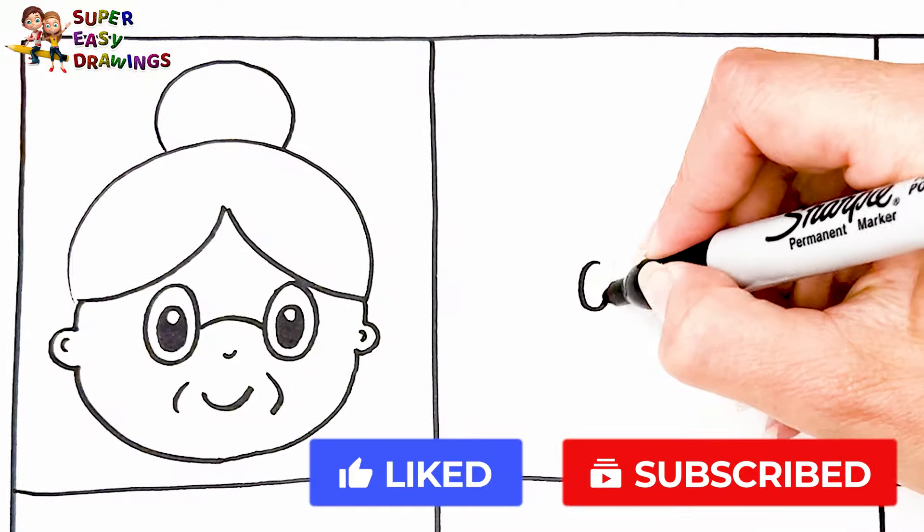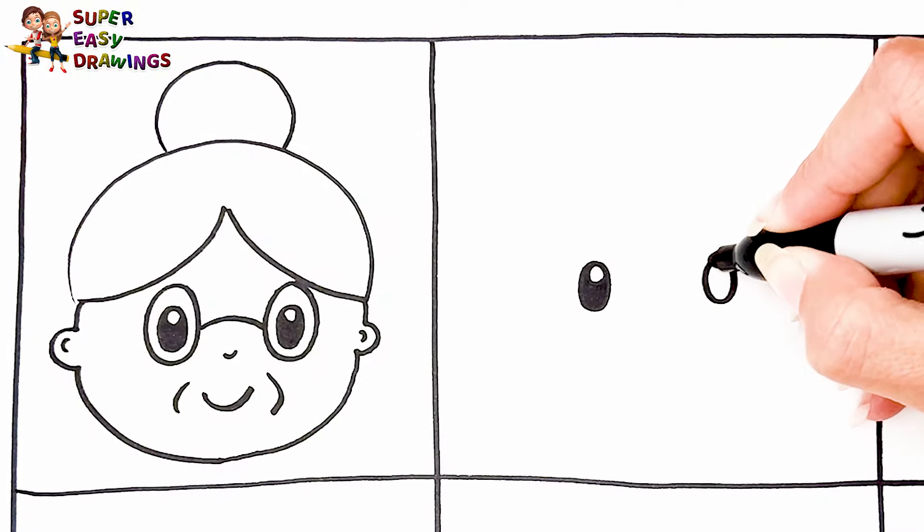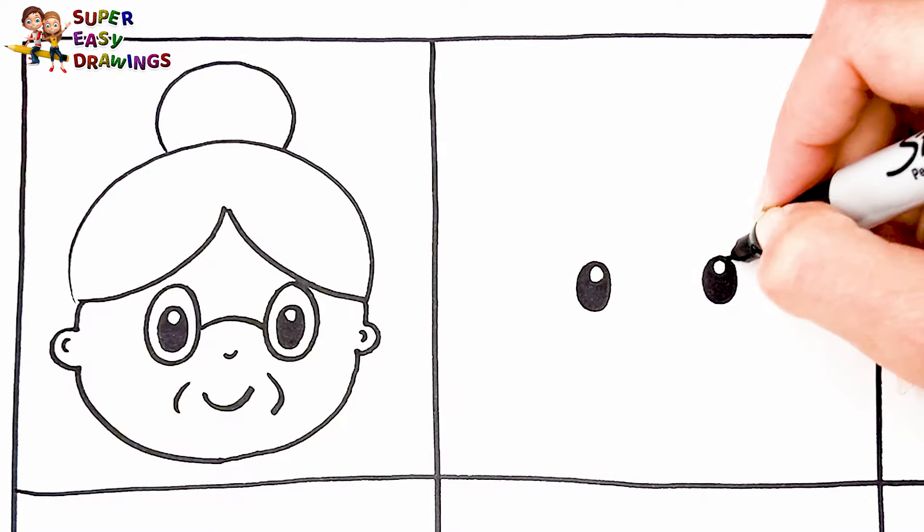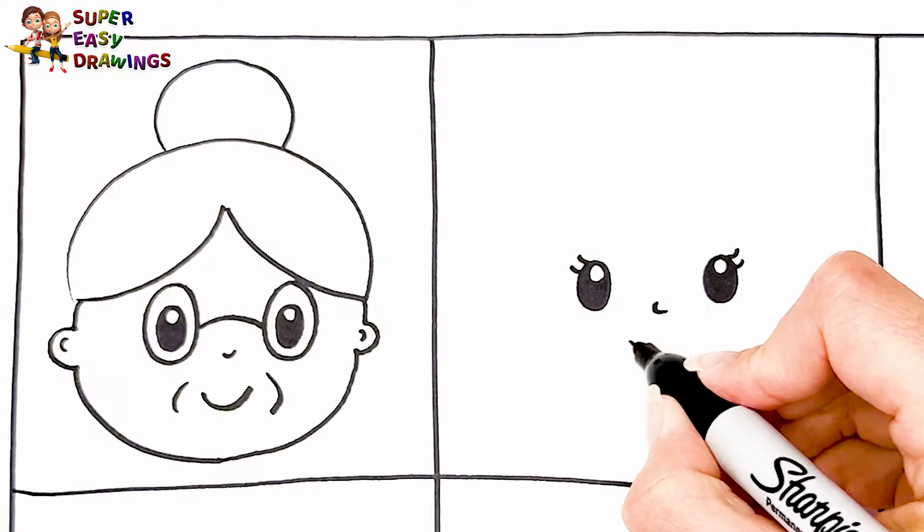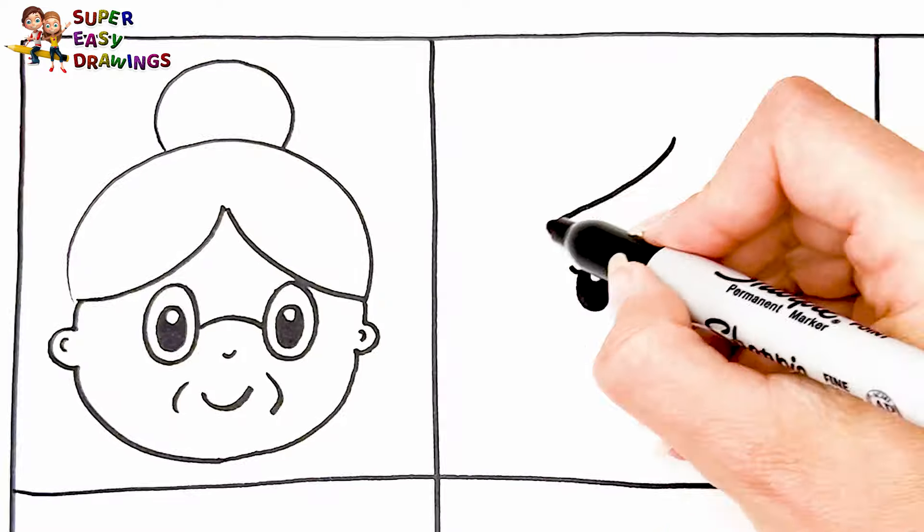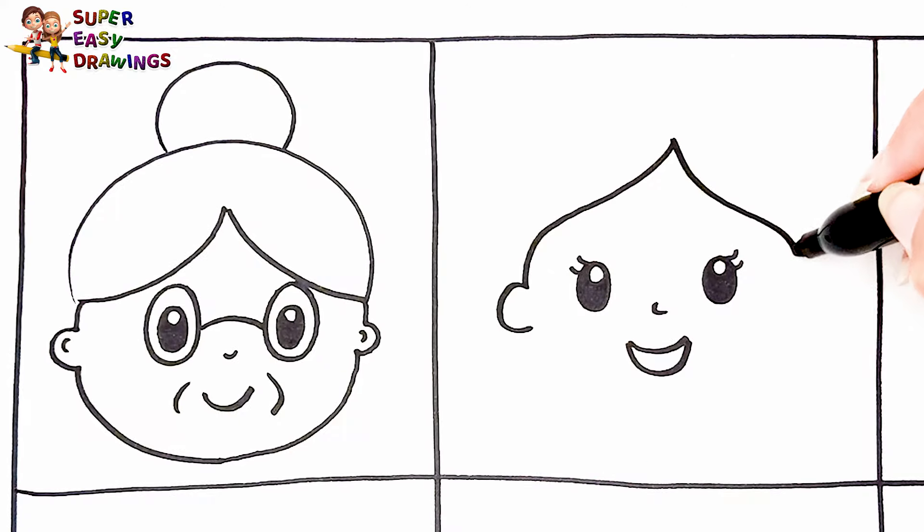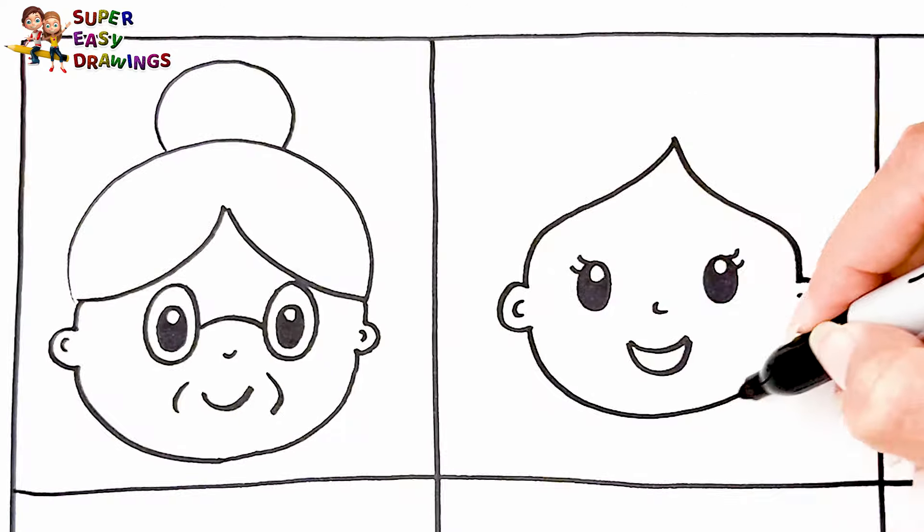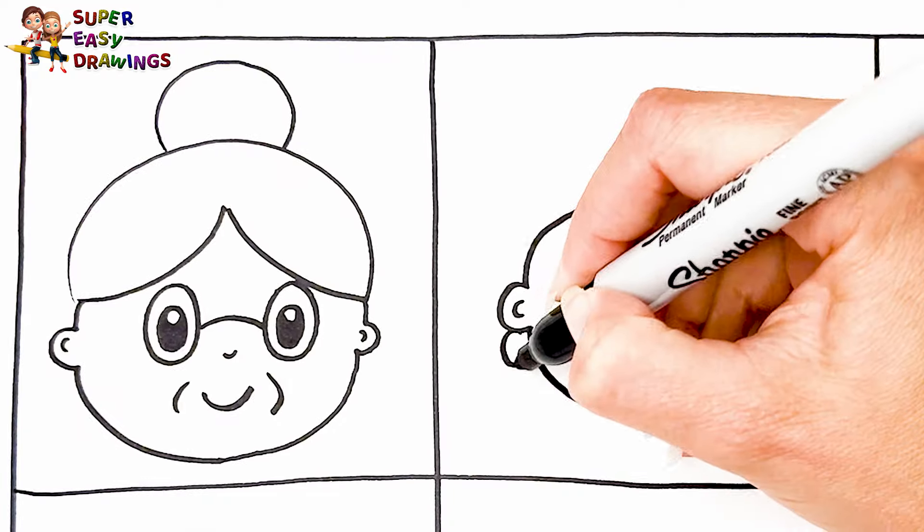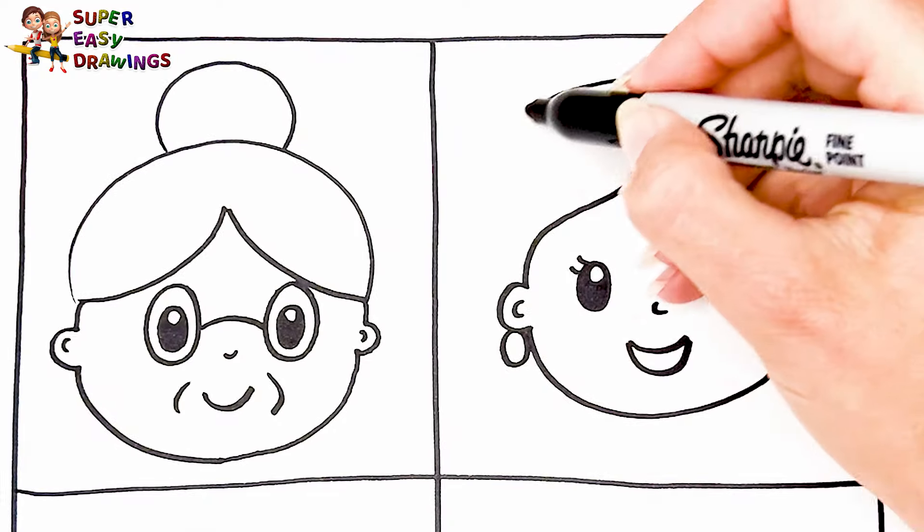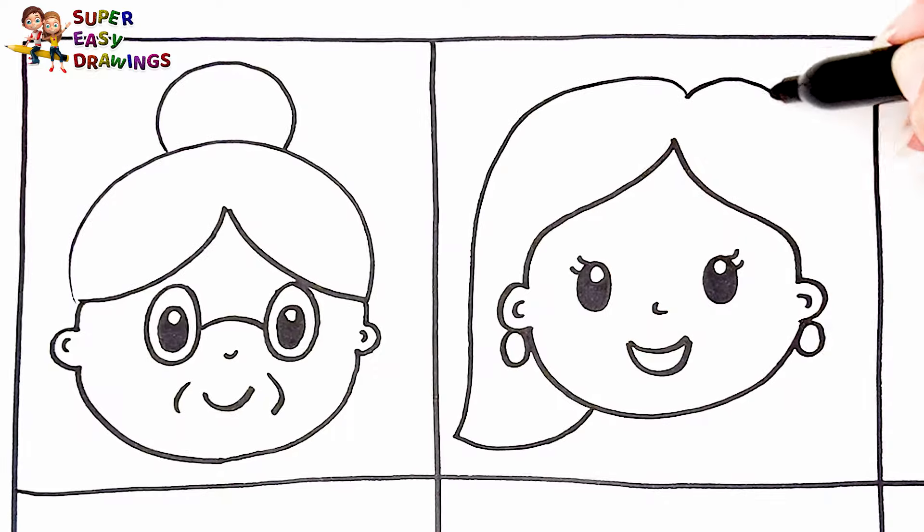Next to her I draw mom. I draw her eyes and eyelashes, her nose and her mouth. Then I draw the ears and her face. She is wearing earrings. Finally I draw her hair like this.